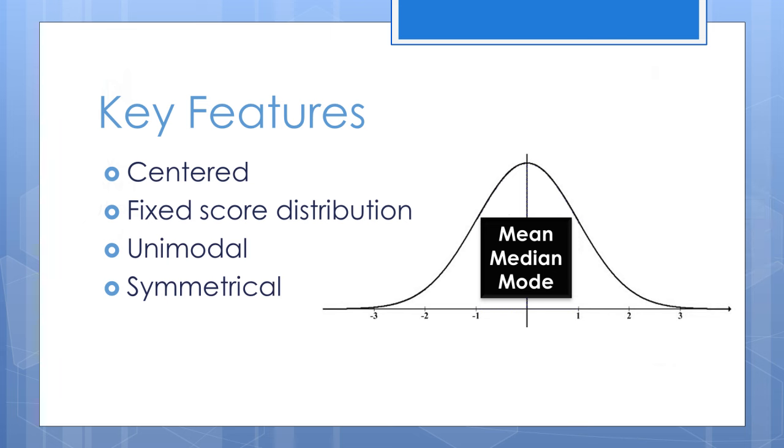Normal distributions share several key features. They are unimodal, meaning that there is only one peak in the distribution. When divided at the mean, a normal distribution takes the form of a symmetrical bell-shaped curve.